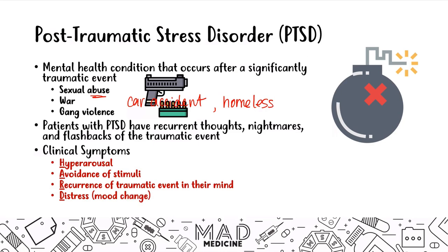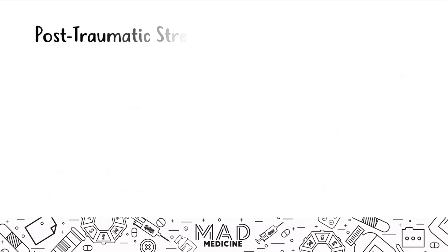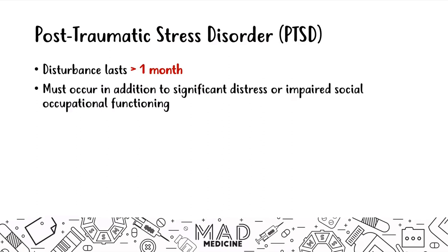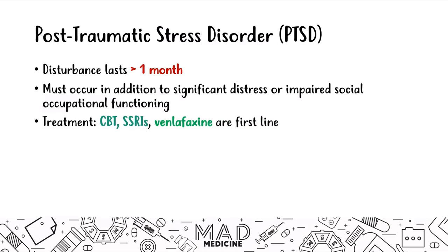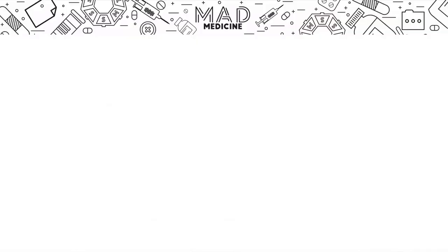PTSD can also interfere with work and school. The memory tool for PTSD is HARD — the first letters of all the key symptoms. These disturbances have to last greater than one month and must occur in addition to significant distress or impairment in their life — it has to be a debilitating issue. That's how you diagnose PTSD. Treatment is CBT combined with SSRIs or venlafaxine, which is an SNRI, given in conjunction to help the patient recover faster. You can also give prazosin, an alpha-1 blocker, which specifically reduces nightmares, but it can cause orthostatic hypotension, so be careful.